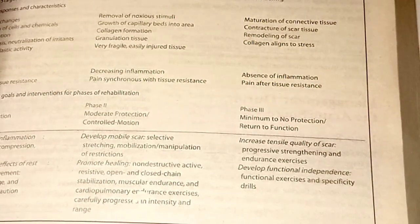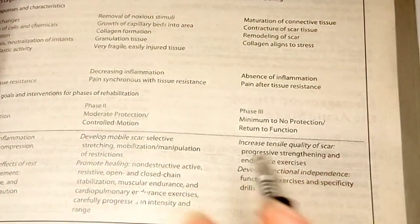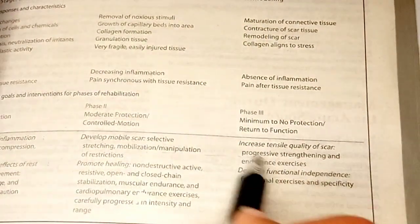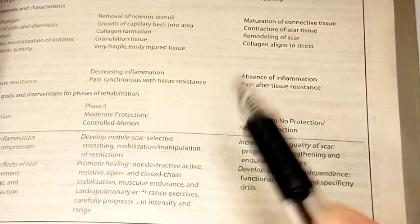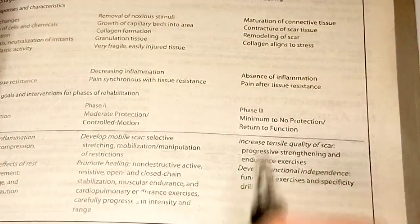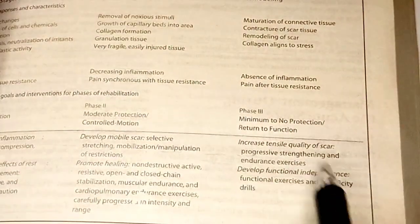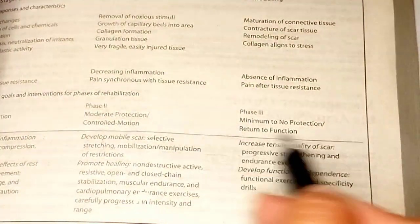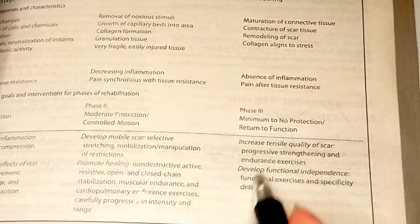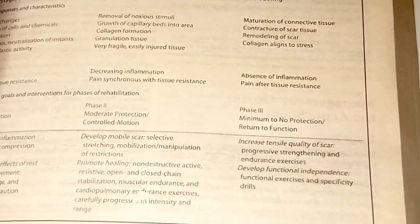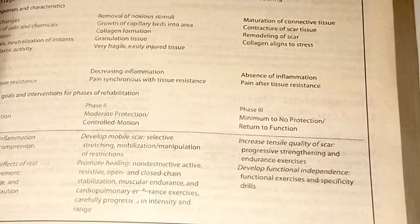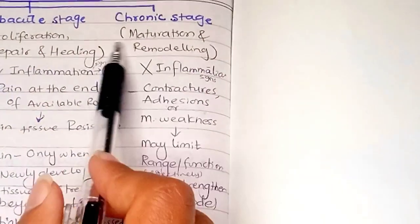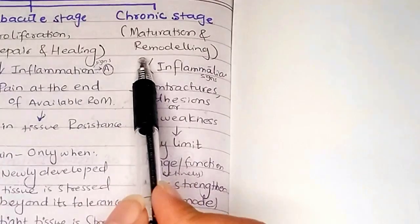The goals in Phase 3 are to increase the tensile quality of the scar through progressive strengthening and endurance exercises. We also want to develop functional independence, meaning the patient can regain their function. Functional exercises and specificity drills help the patient regain activity. From the notes: in the chronic stage there is maturation and remodeling, and inflammatory signs are absent.